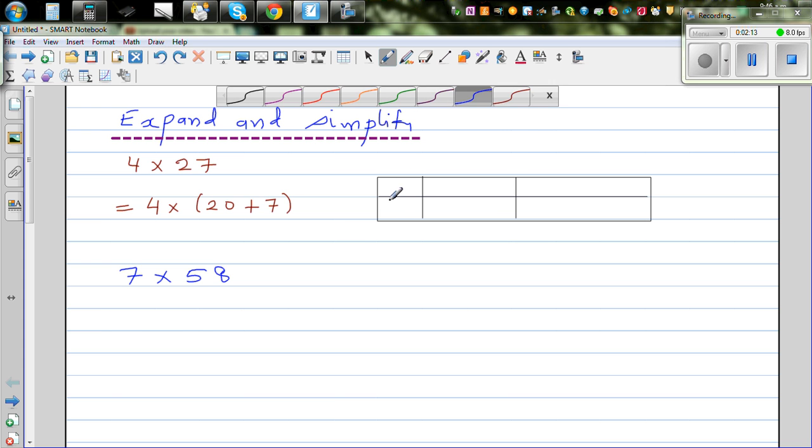This is 7 times 50. 58 can be written as there are 5 tens, which is 50, and 8 ones. So you simply do 7 times 5. I know 7 times 5 is 35, and then you put a 0. This is 350, and 7 times 8 is 56.